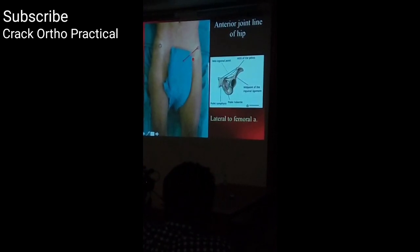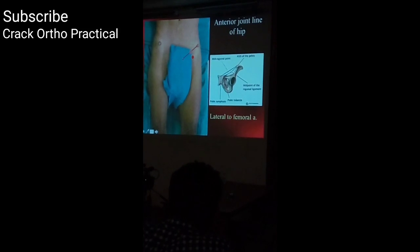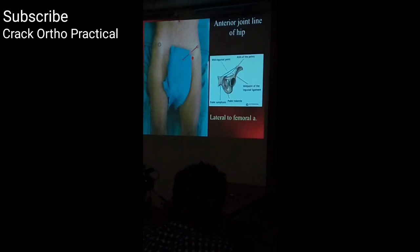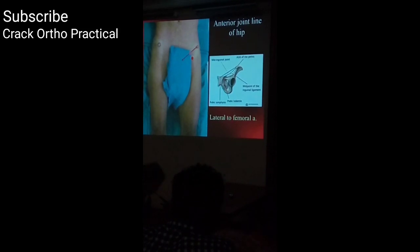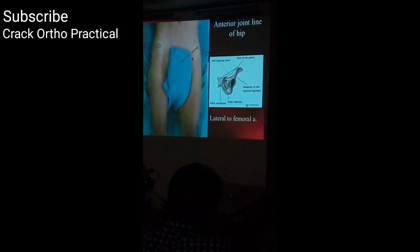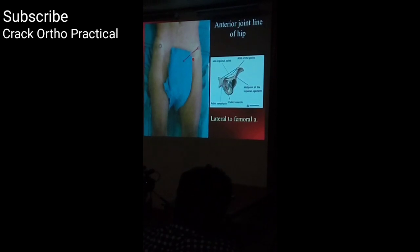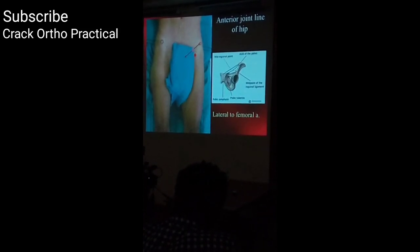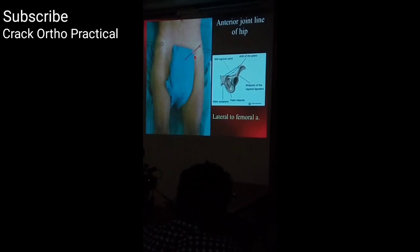The hip joint line lies just lateral to the femoral artery. To find the pubic tubercle in a fatty patient, adduct the limb against resistance — the adductor longus contracts — then trace it toward its origin at the pubic tubercle. From the pubic tubercle, going superolaterally, the first bony prominence you feel is the antero-superior iliac spine. This is how to trace the bony landmarks.